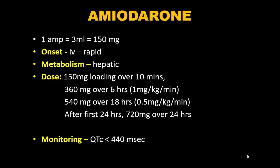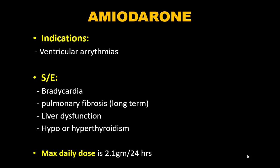QTc interval must be monitored with amiodarone as it can cause ventricular tachycardia and bradycardia. Indications: ventricular arrhythmias. Long-term side effects include bradycardia, pulmonary fibrosis, liver dysfunction, and both hypo- and hyperthyroidism (Wolf-Chaikoff effect). Maximum daily dose is 2.1 grams in 24 hours.